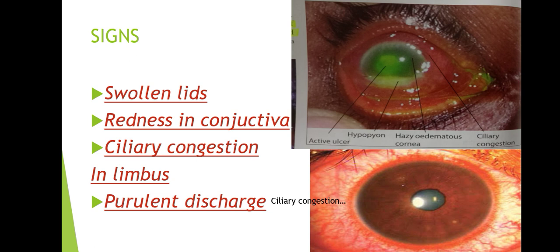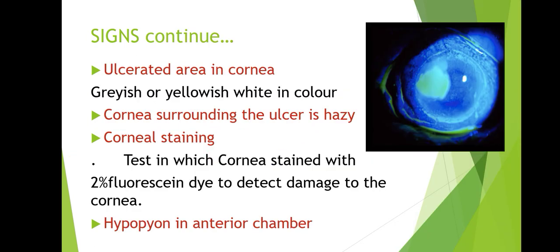Signs: swollen lids or edema, redness and congestion in the conjunctiva, ciliary congestion in the limbus — the limbus is the border between the sclera and the cornea — arranged in radial fashion. There is purulent discharge. In the cornea, there will be ulceration that is grayish or yellowish-white in color.